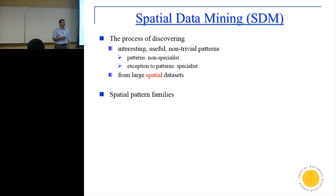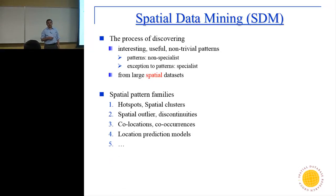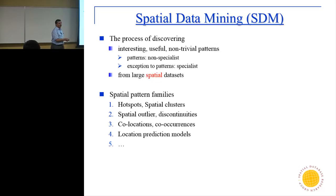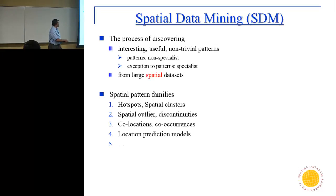Here are pattern families in spatial data mining, distinct from classical machine learning. First, global outliers in statistics become local spatial outliers here. Second, clustering in machine learning becomes hotspots in geography. Third, association rules don't work well in space, so we have a generalization called co-location. Finally, prediction models — there are dozens in machine learning, but as you bring in spatial data, you need to do something more than just take the old ideas.